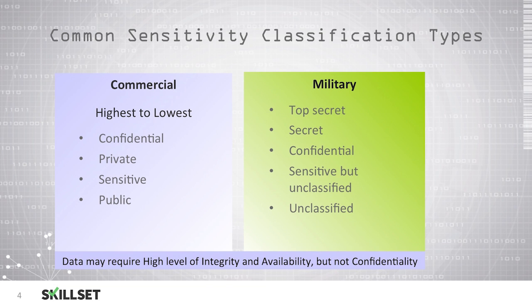Depending on the type of data that you are trying to protect, you may require a high level of integrity and availability, but you may not need any confidentiality. An example would be an online store where the prices of items are not confidential, because anyone who visits the store can view the prices. However, it is important to make sure that the price database is always available and that the data has integrity, because we do not want someone modifying the prices and purchasing things for less than we are willing to sell them for.